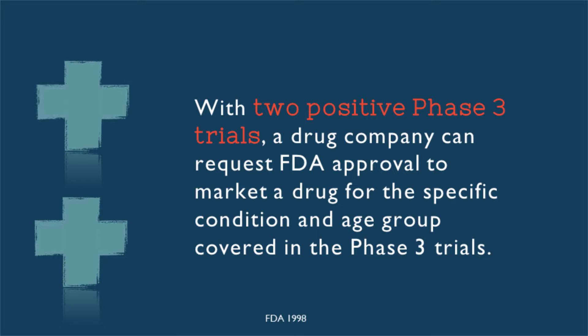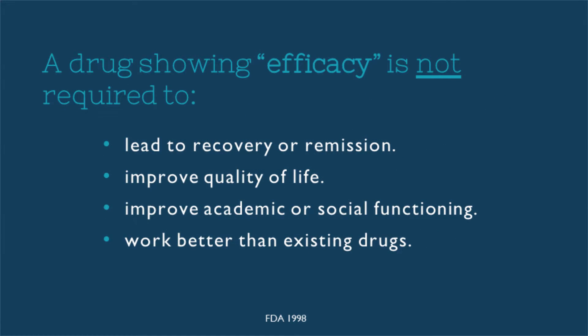A drug company can conduct many trials that turn up negative results for its drug. However many trials of the drug turn up negative, the drug company only needs to produce two positive trials. During the approval process, a drug is constructed as being efficacious or not. Efficacy is determined on the basis of statistical differences between drugs and placebo.